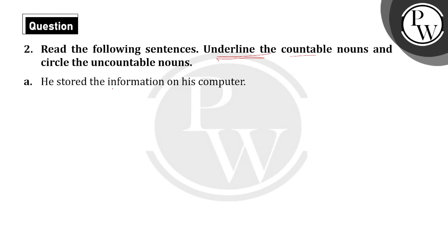The sentence is: He stored the information on his computer. So 'computer' — we can count how many computers, so it is countable. But 'information' — how many information did we store? We cannot count it, so it is uncountable.